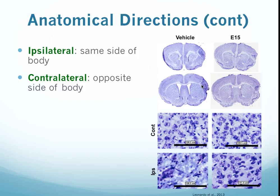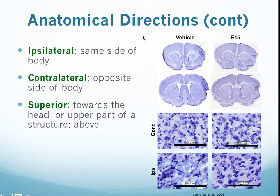Whenever we're talking about something that's ipsilateral, we're talking about something that is on the same side, whereas something that's contralateral is something that's on the opposite side of the body. These are relative terms. In this particular case, there was a stroke that the animal was subjected to on the right side of the brain. So the ipsilateral side is going to be the right side, because it's ipsilateral to where the stroke occurred. Contralateral would be the opposite side — if the stroke occurred on the right side, then the left hemisphere would be the contralateral hemisphere.